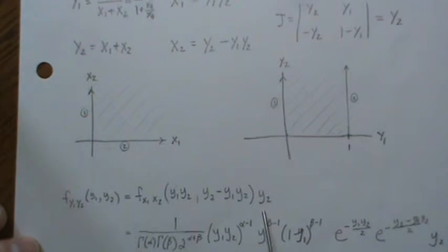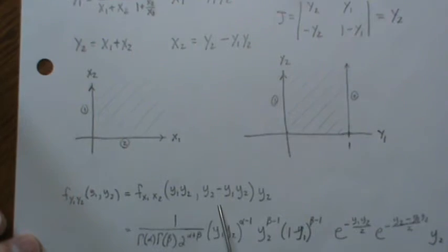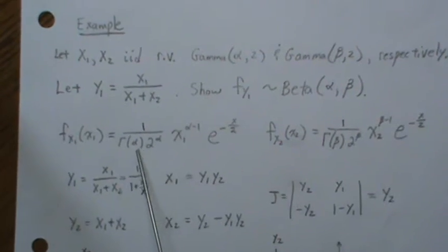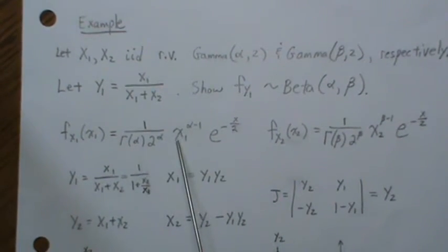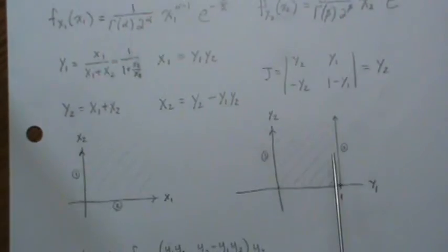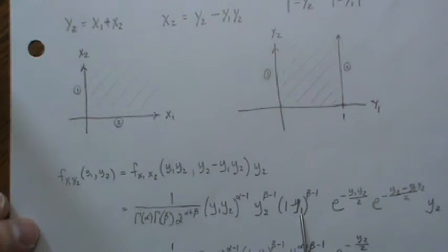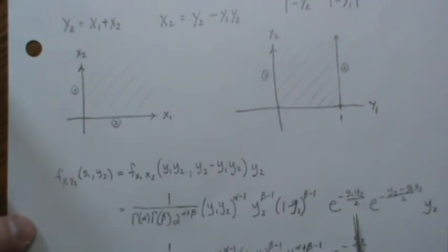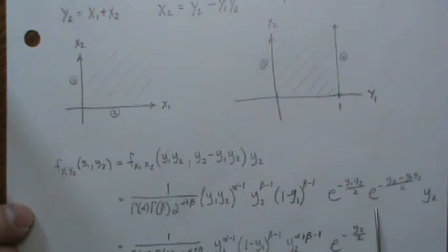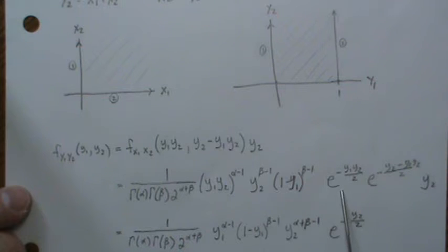And that's what these quantities are, times the absolute value of the Jacobian. And since Y2 is always positive we can just stick it there. So that means put these values into the densities here for X, right there. So that's what we do right here.